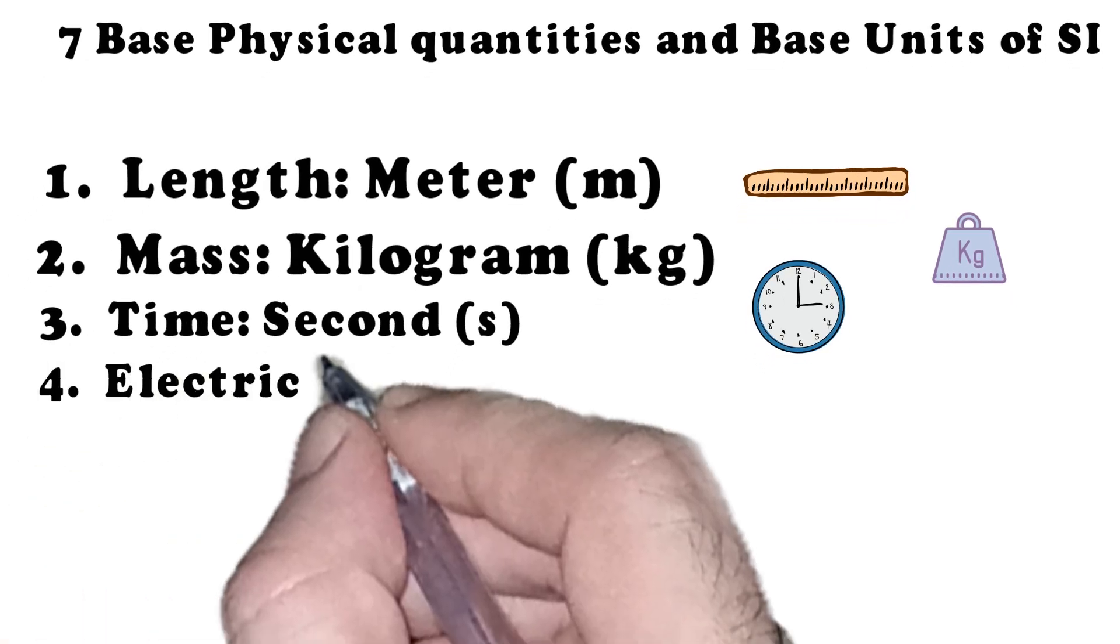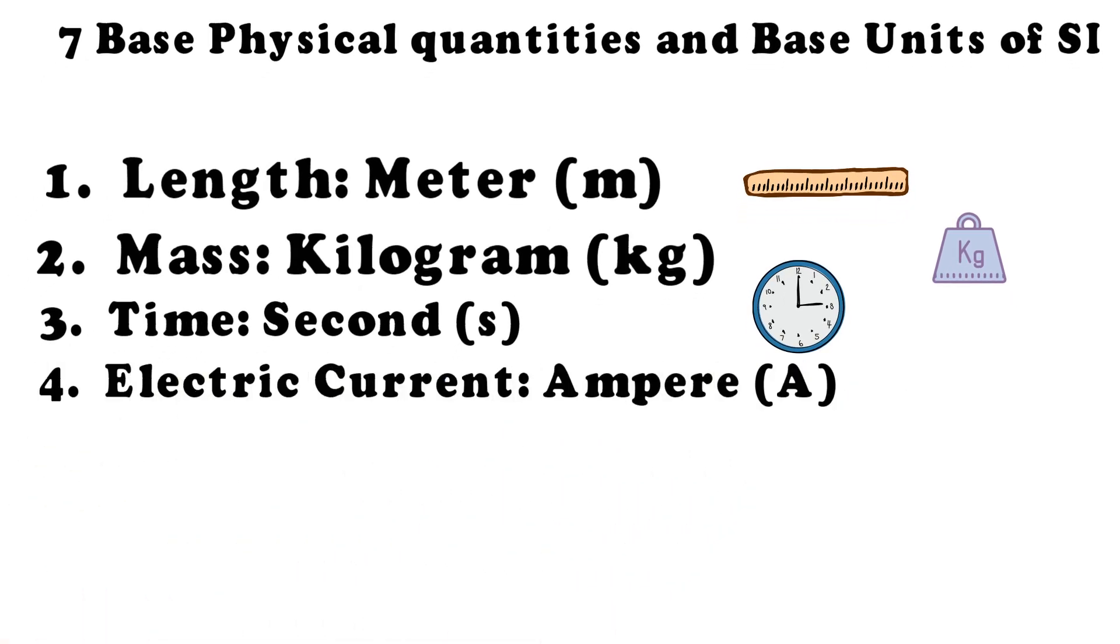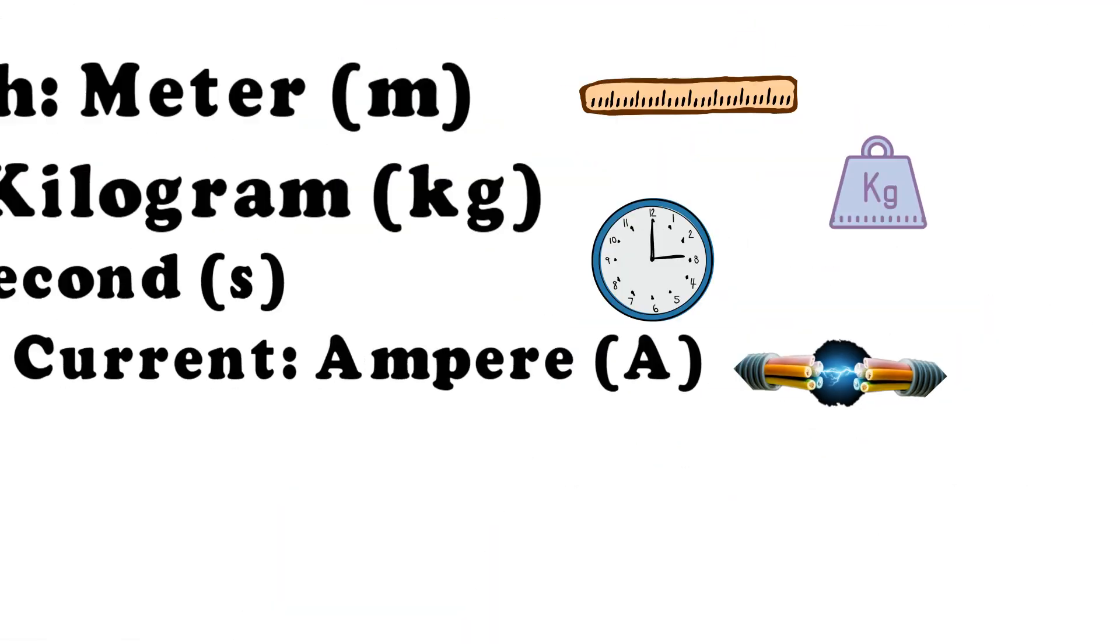For electric current, we use the ampere or A. It measures the flow of electric charge.